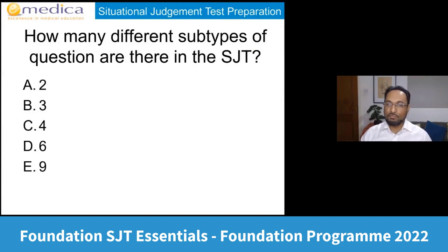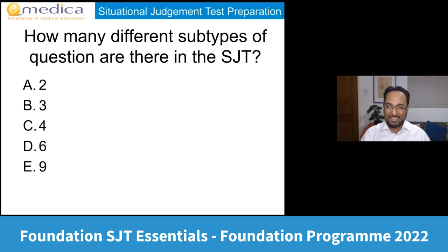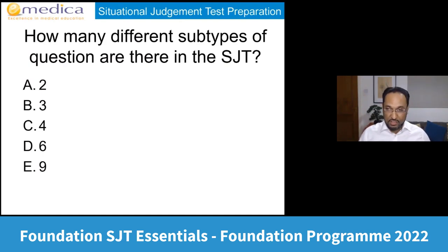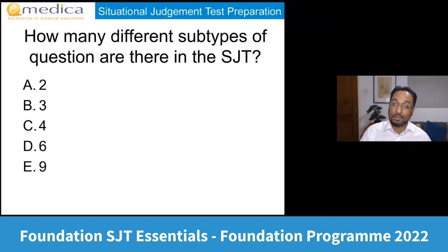Next question: how many different subtypes of questions are there in the Foundation SJT? Options range from 2 to 9. The two most popular answers were 3 and 4, but the correct answer is going to surprise a lot of you — it's 9. There are nine distinct subtypes of SJT questions within the Foundation SJT now. There are three sections, and each section has three subtypes, so there are nine different types of questions you could face. A lot of changes happened to the SJT last year, and some books may not be up to date about the newer style questions.